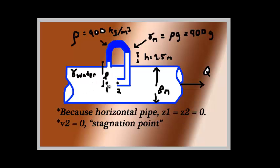Now because horizontal pipe, Z1, which is the head loss over here, is equal to Z2. So they are both at the same level. So they are equal to 0. So there won't be any difference.